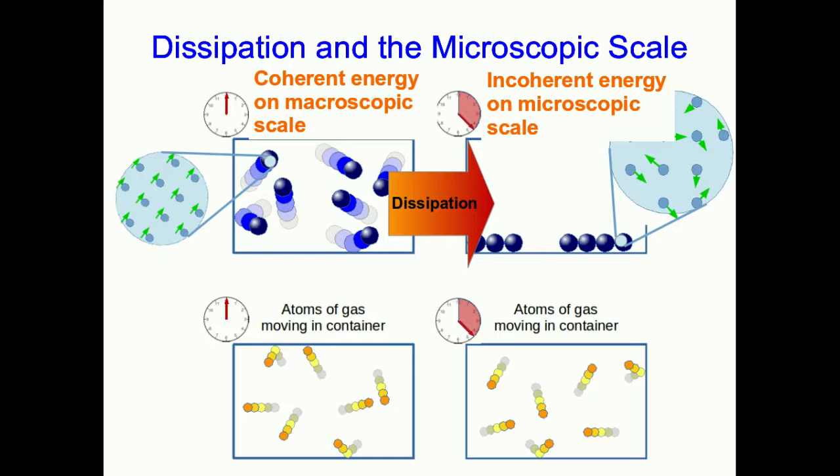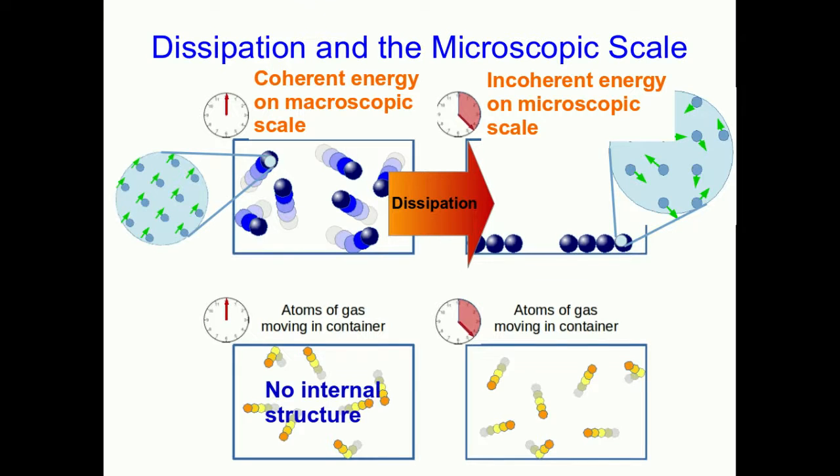But in contrast to all that, the atoms of gas don't have internal structure. Atoms aren't made of atoms, and so no dissipation occurs. Now, you may object, wait a second, Jeff, atoms sure do have internal structure. They're made out of electrons and protons and neutrons.